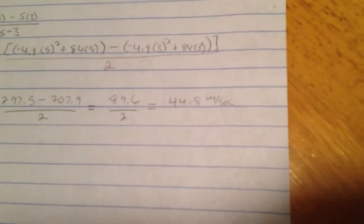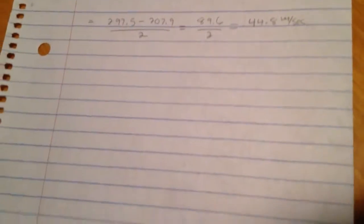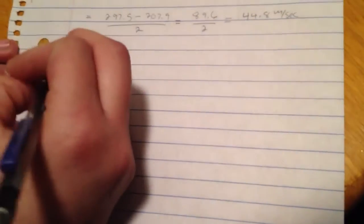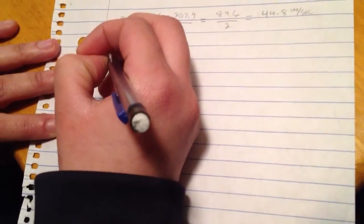So the third question asks us to find the velocity of the projectile at 3 seconds. Considering we're only given exactly 3 seconds, that means they're looking for instantaneous velocity. So in order to find that one, we need to find just the plain velocity.